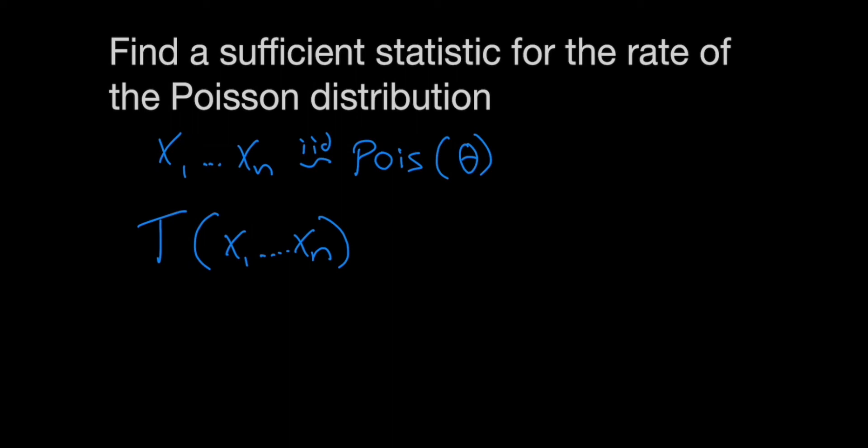In different words, a sufficient statistic has just as much information about the parameter as does the entire data set. So it's not any better to have every x1 through xn if you have your sufficient statistic t.